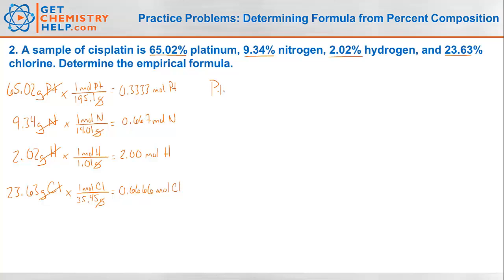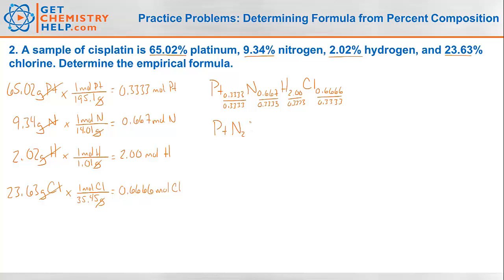We write a pseudo-formula: Pt(0.3333), N(0.667), H(2.00), Cl(0.6666). Dividing all by the smallest, which is 0.3333 for platinum, gives whole number ratios. The result is PtN₂H₆Cl₂ — so the empirical formula of cisplatin is PtN₂H₆Cl₂.